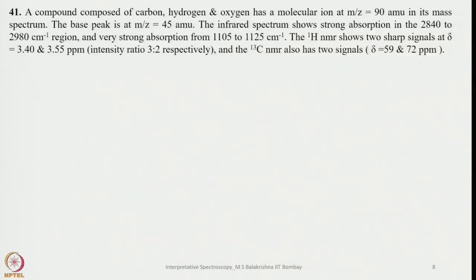Now let us look at another example. A compound composed of carbon, hydrogen, and oxygen has a molecular ion at m/z = 90 in its mass spectrum. The base peak is at m/z = 45 atomic mass units. The infrared spectrum shows strong absorption in the 2840–2980 region and a very strong absorption from 1150 to 1250 cm⁻¹. The 1H NMR shows 2 sharp signals. We have to identify this compound.